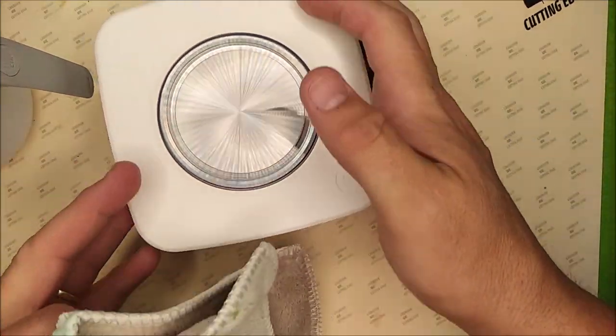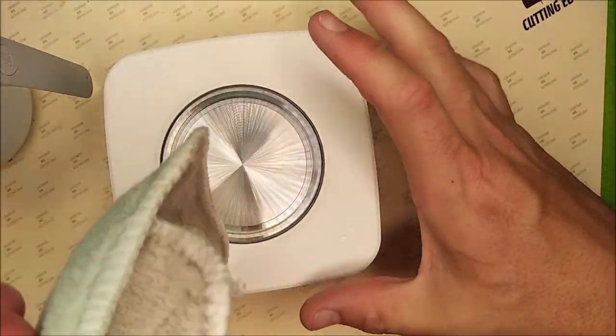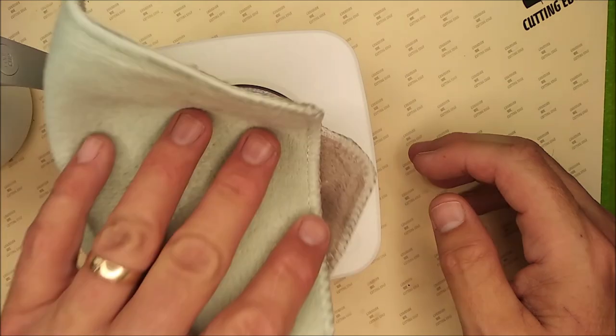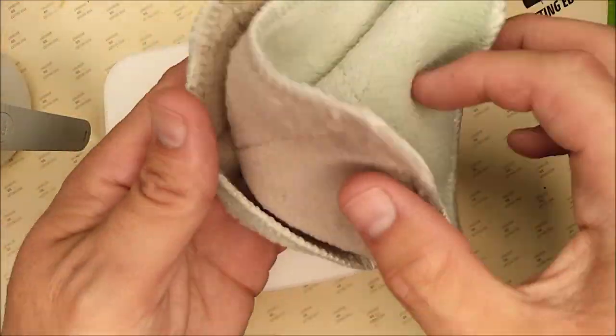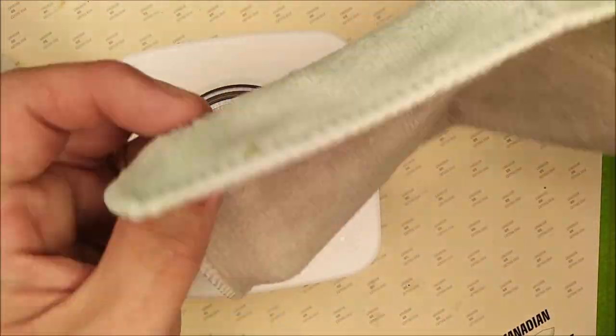When you're cooling stuff off, condensation can form over this, and you don't want it running through. You need to wipe it off easily enough. Nice microfiber cloth, two-sided, so it's nice and thick.